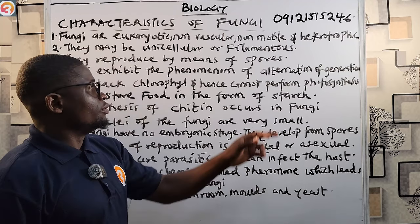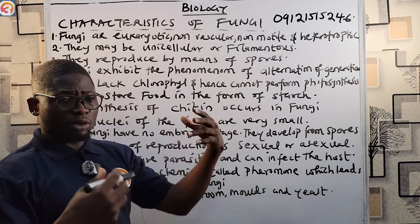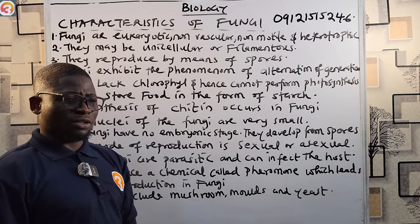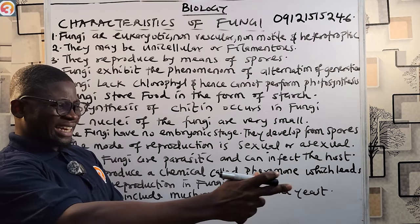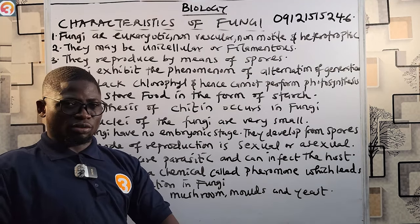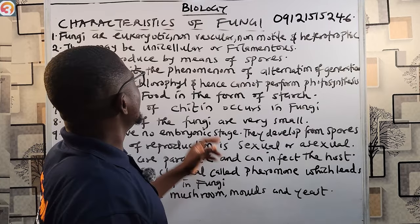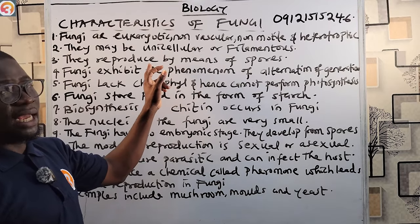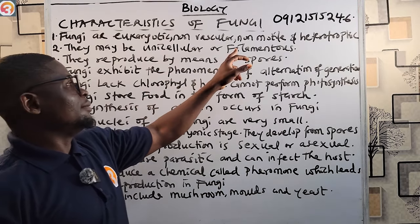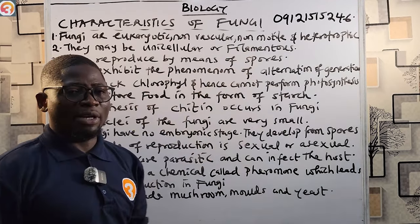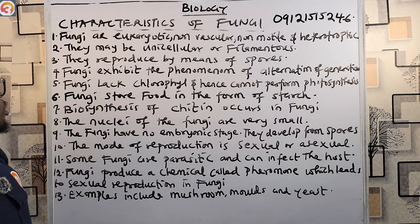Number five: they may be unicellular or multicellular or filamentous. Filamentous means that they have thread-like structures. So they may be unicellular like the yeast cell, or they can be filamentous.